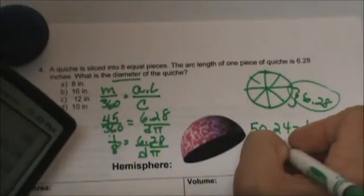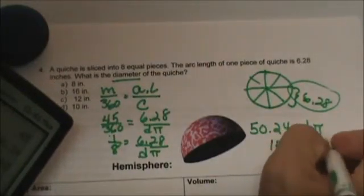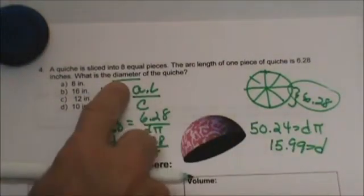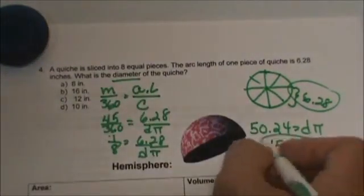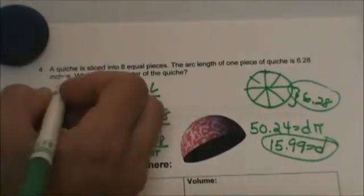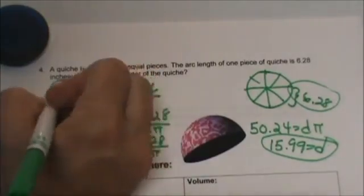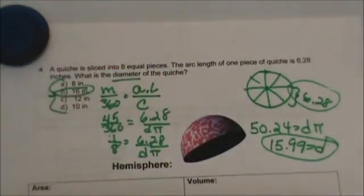So the diameter is 15.99, and so what do we know? Oh that is the diameter so we're done. So this is asking for an approximate. So what do you think the best choice is? Yes obviously, b is, which is 16 inches.